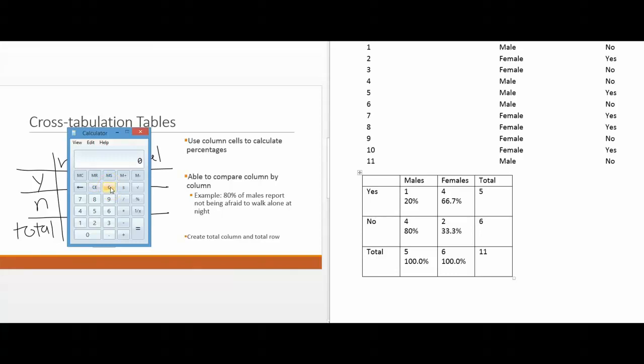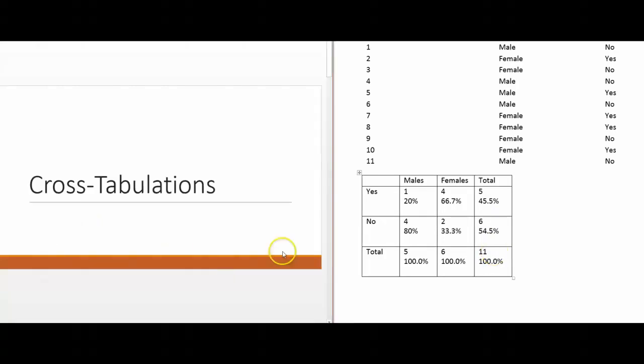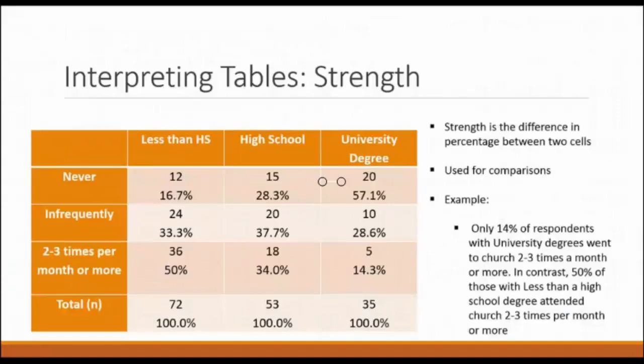A total of five people said yes, and there was a total of 11 people in the survey, which gives us 45.5%. Six people said no out of a total of 11, and so that means that 54.5% of our sample said no. So now what does this tell us? This tells us that 20% of the males in the sample said yes, and that 66.7% of the females in the sample said yes.